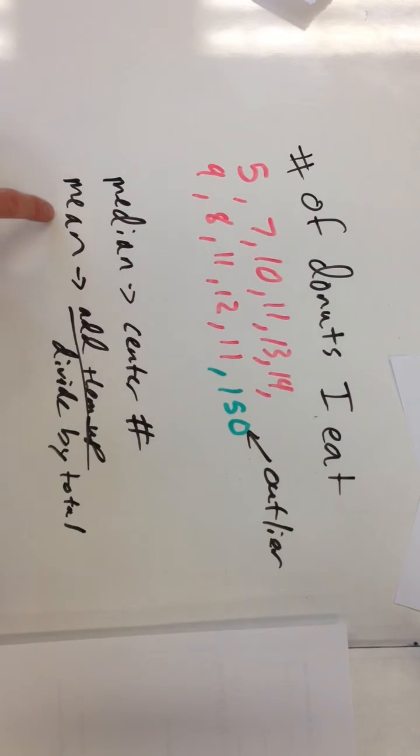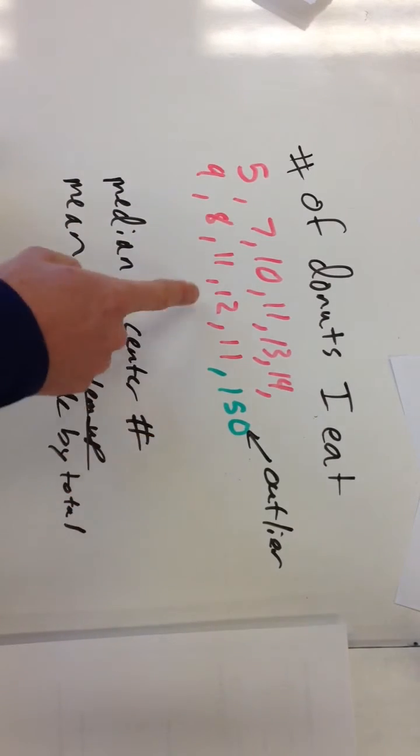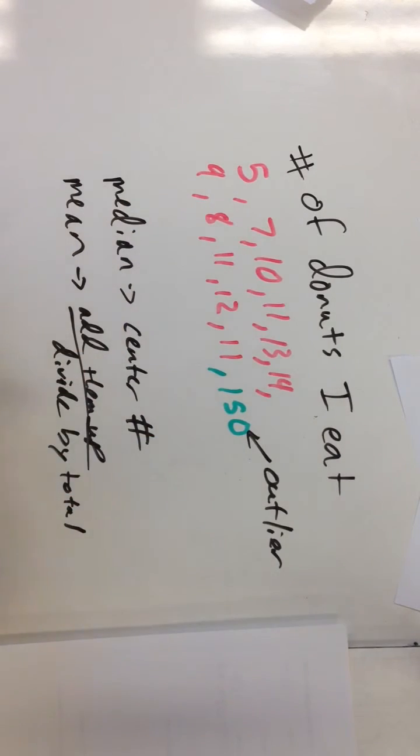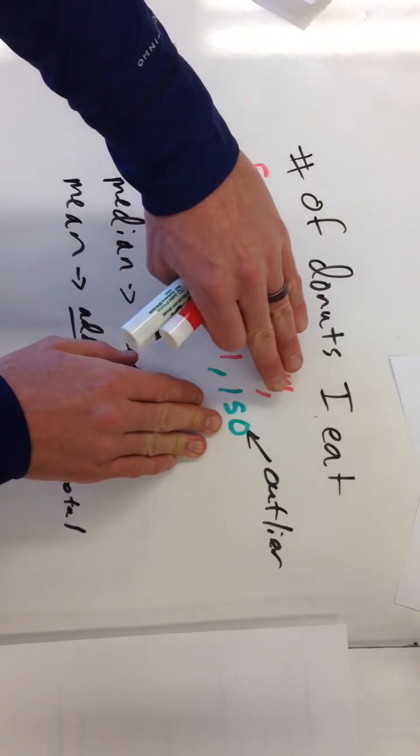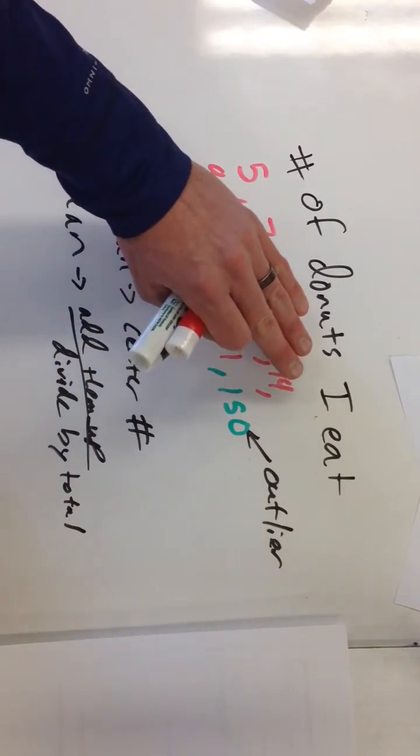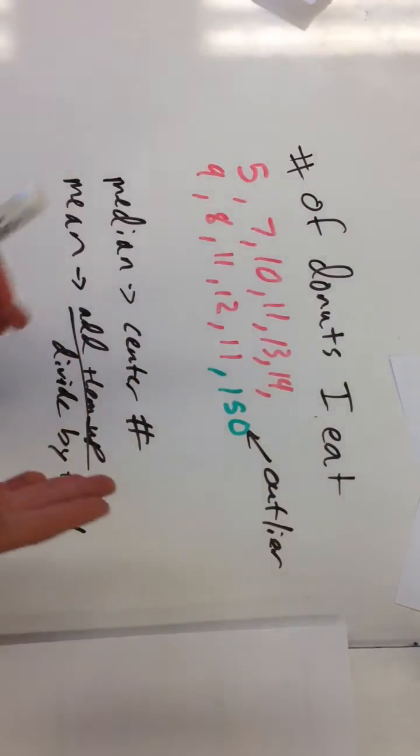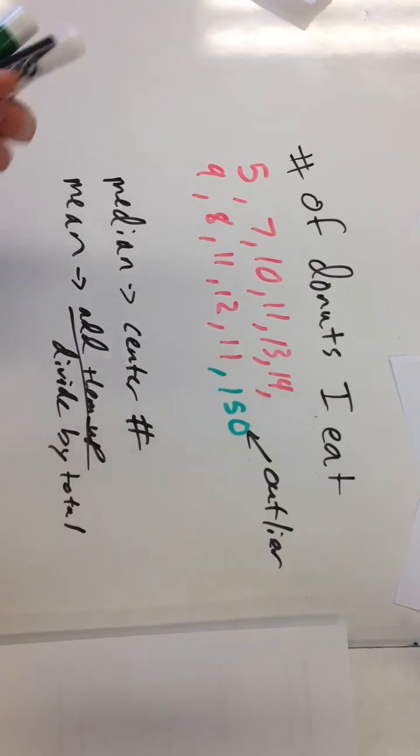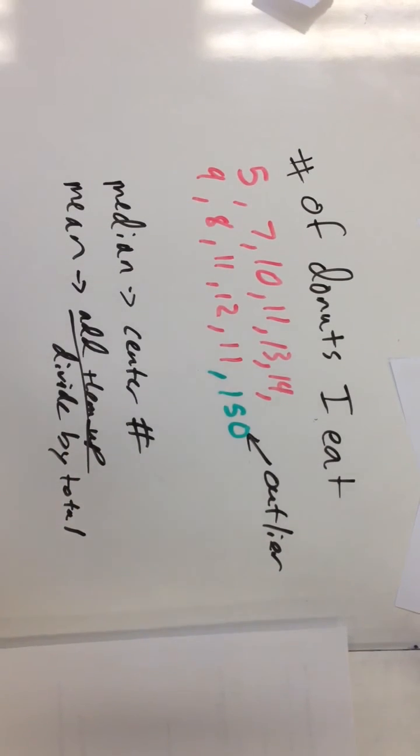So with this data, I would expect the mean to be far higher than the median because of that outlier. If the outlier was on the low end, let's say that I always ate 150 donuts a month and one month I ate 5, the outlier would be on the low end. That would bring the mean down. So the mean always follows the outliers.